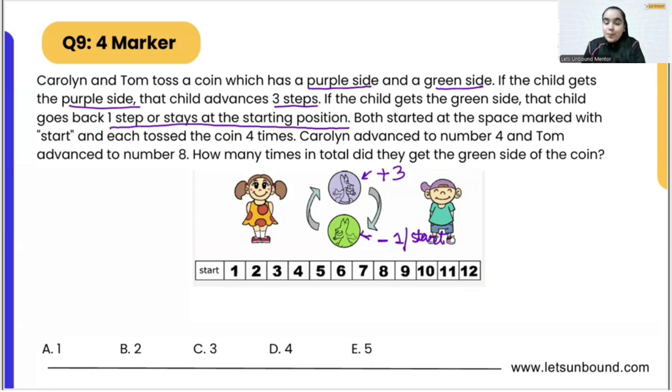Both started at the space marked with start. Both Caroline as well as Tom they started from start, and each tossed four times.